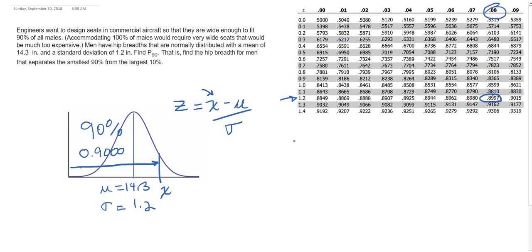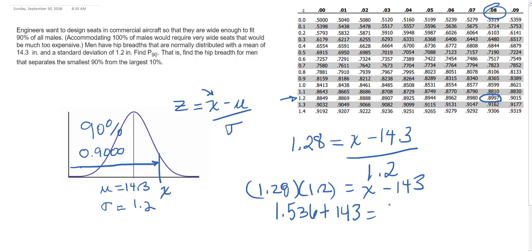Now I just plug into my formula: 1.28 equals X, which is what I'm solving for, minus 14.3, divided by 1.2. Now I just go through my algebra skills. I would move the 1.2, multiply it on both sides, and I get 1.536. Then I would add 14.3 to both sides and I get 15.8, rounded to one decimal place.